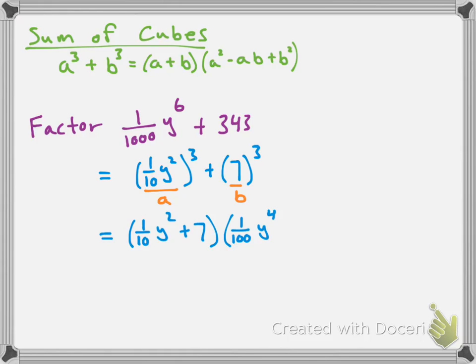And then we have minus ab. So we have negative 1 over 10 y squared times 7. So that's going to give us negative 7 over 10 y squared.